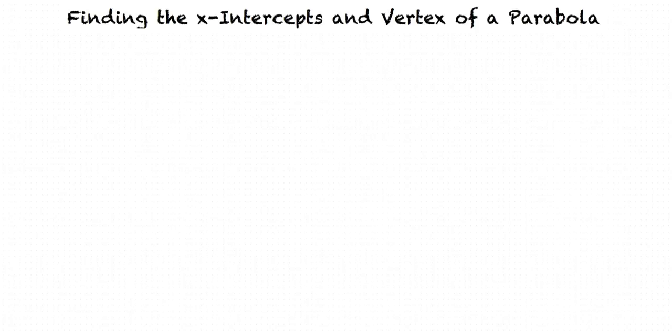When we look at parabolas, two important defining characteristics are x-intercepts and the vertex. An x-intercept is the x-coordinate of a point where the graph crosses the x-axis.